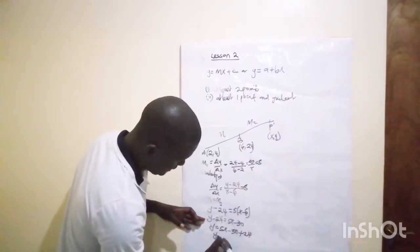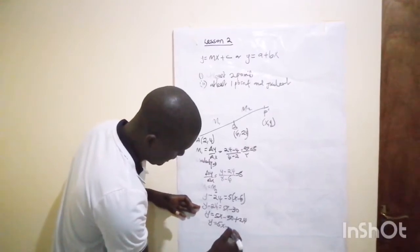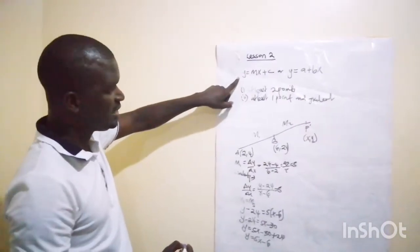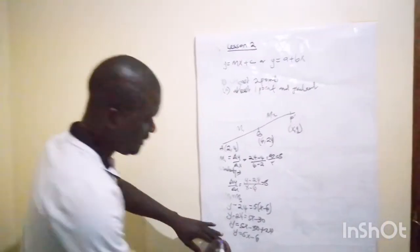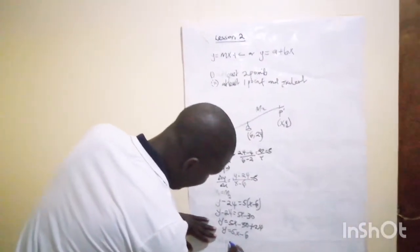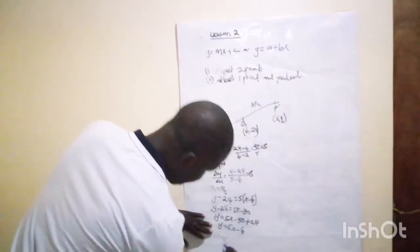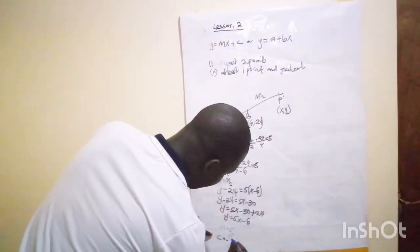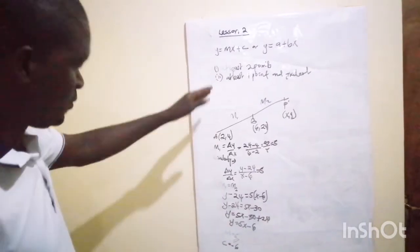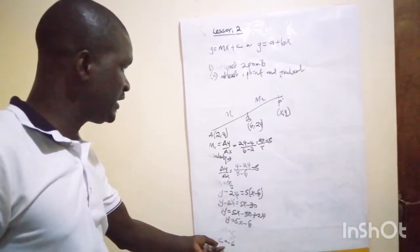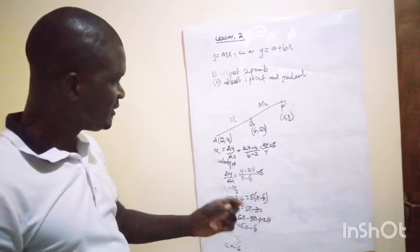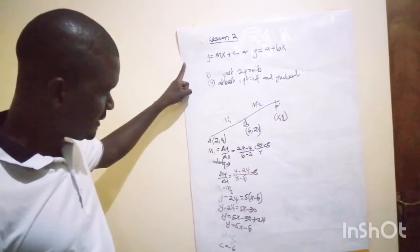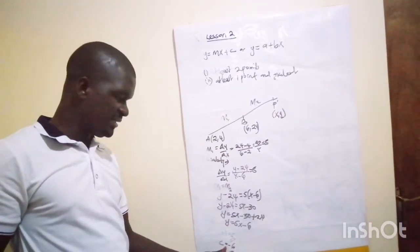Taking 24 to the other side: y = 5x - 6. In the form y = mx + c, this tells us m is 5 and c is negative 6. This means the line cuts the y-axis at negative 6, so c is the y-intercept.